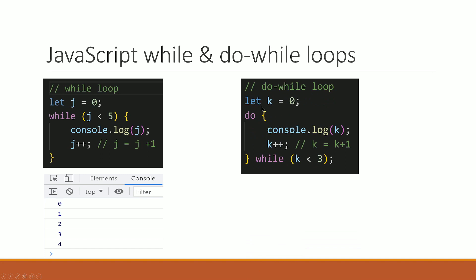For do...while: let k equal to 0. Do — console.log k — then k++ gives 1. Check while k less than 3: 1 less than 3 — true. Console.log 1, k++ gives 2. 2 less than 3 — true — console.log 2, k++ gives 3. Check: 3 less than 3 — false. Output: 0, 1, 2.